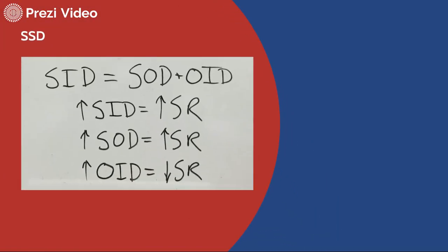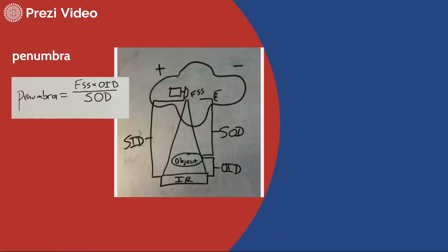Source to image, let's just say SID, not SSD, but the SID is broken down into the SOD plus the OID. The source to object to image receptor distance is what we have in the SID. As we increase the SID, we have an increase in spatial resolution. As we increase the SOD, we also see an increase in spatial resolution. But with the OID, we see an inverse relationship. As it increases, spatial resolution decreases. We start to get more blurred. This is because of this formula here, which is a calculation of penumbra. We can multiply the focal spot size times that object to image receptor distance and divide it by the SOD in order to find the actual size of the shadow that's being projected from an object.